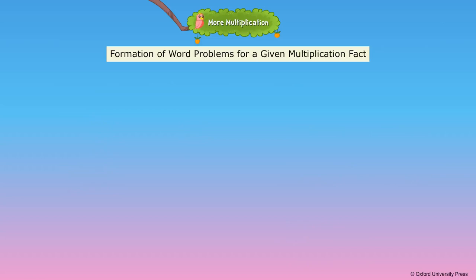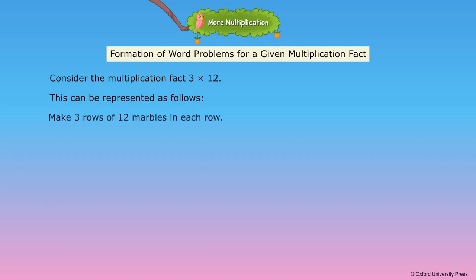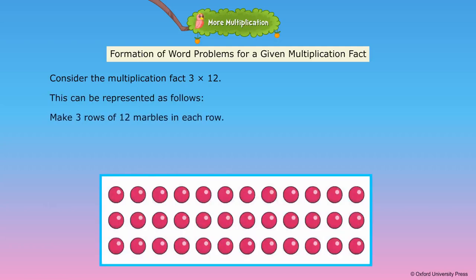Formation of word problems for a given multiplication fact. Consider the multiplication fact 3 × 12. This can be represented as follows: Make three rows of twelve marbles in each row. A word problem can be formed for the multiplication fact.